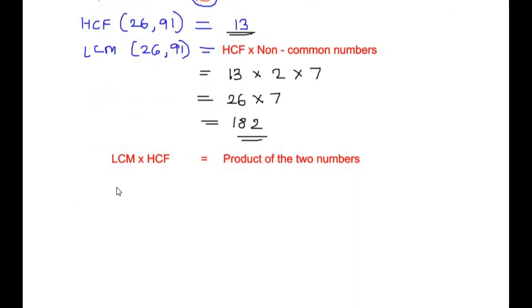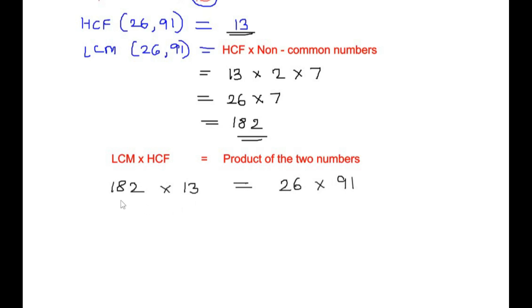LCM is 182 and HCF is 13. Let us also check the product of the two numbers, that is 26 times 91, to see if we get the same answer. Using long multiplication for 182 times 13: 3 times 182 gives us 546, and 1 times 182 gives us 182 shifted one place.